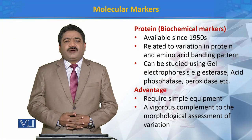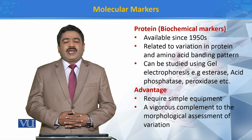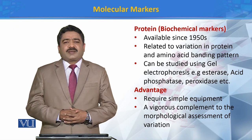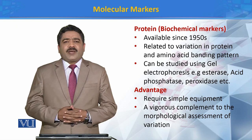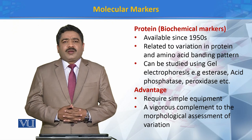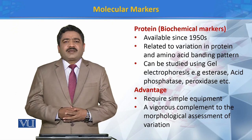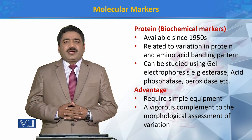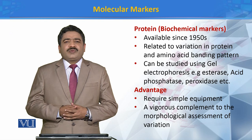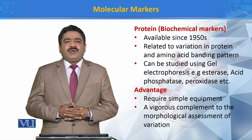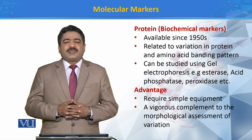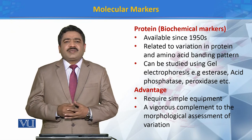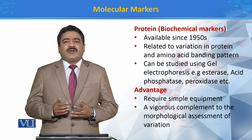In taxonomic studies we use different types of molecular markers. One of such markers is protein markers, which are also known as biochemical markers. This type of markers has been available since the 1950s. In these types, we use protein and amino acid banding pattern to compare the differences in amino acids and proteins among different individuals.